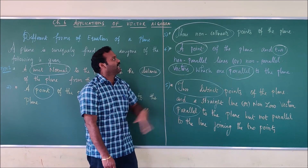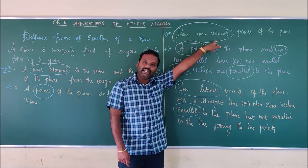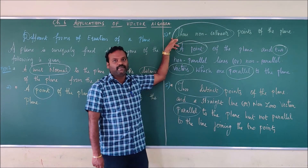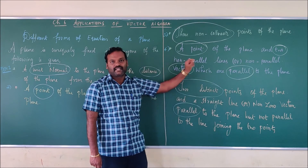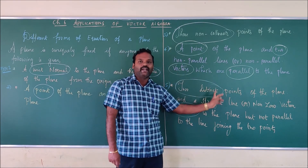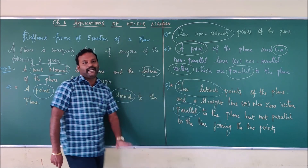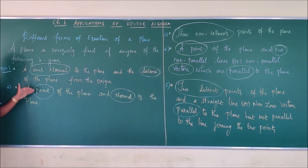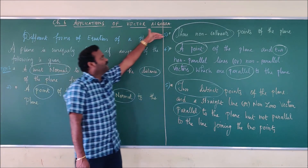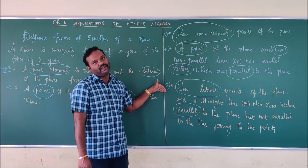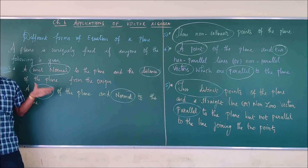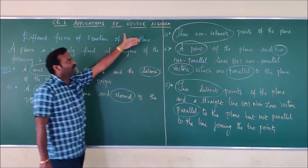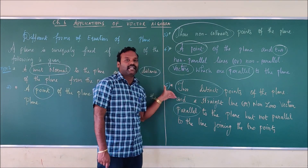In short, you have to remember the types like this: three non-collinear points is type 3; one point and two parallel vectors is type 4; two points and one parallel vector is type 5. Types 4 and 5 will come under two-mark and three-mark questions. We are first going to see the formulas for type 3, type 4, and type 5, and then discuss type 1 and type 2.